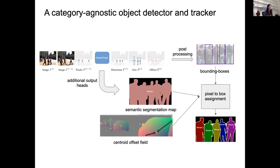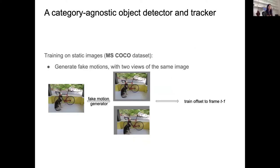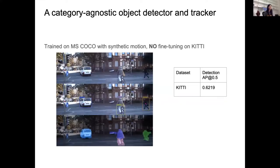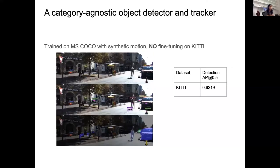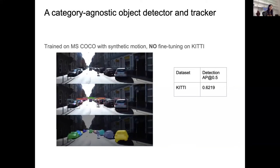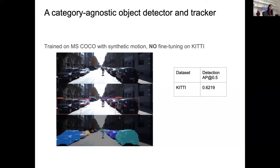We trained this using MS COCO data. The trick of recent works is that you don't need labeled videos to train detectors — you can just take an image, move around the object bounding boxes, and simulate fake motion. All bounding boxes are labeled generically. The network can detect objects pretty accurately and follow them, with color indicating identity. It achieves a decent mAP on KITTI while never having been trained on KITTI.